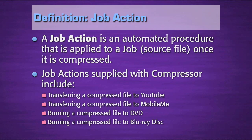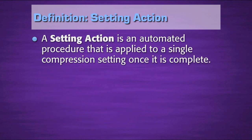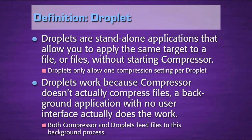A job action is an automated procedure that is applied to a job — that's the source file — once the job is compressed. Job actions supplied with Compressor include transferring a compressed file to YouTube, transferring a compressed file to MobileMe, burning a compressed file to DVD, or burning a compressed file to Blu-ray Disc. A setting action is an automated procedure that is applied to a single compression setting once it is complete. Droplets are stand-alone applications that allow you to apply the same target to a file or a group of files without first starting Compressor. The difference between a droplet and a batch is that a droplet only allows one compression setting and one destination per droplet, whereas a batch allows multiple compression settings and multiple destinations per batch.